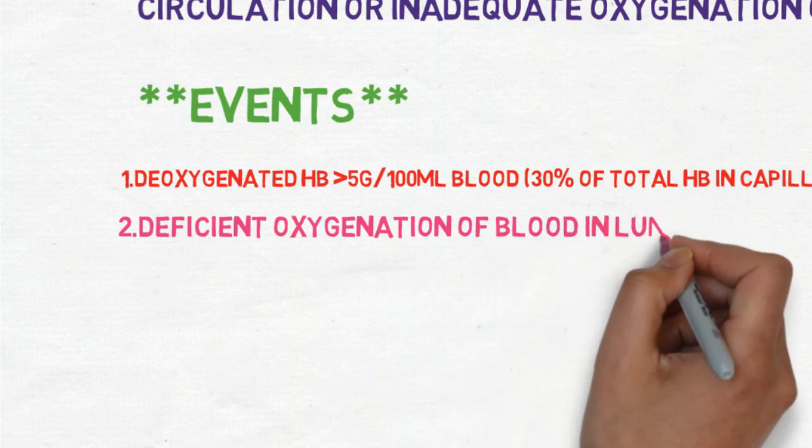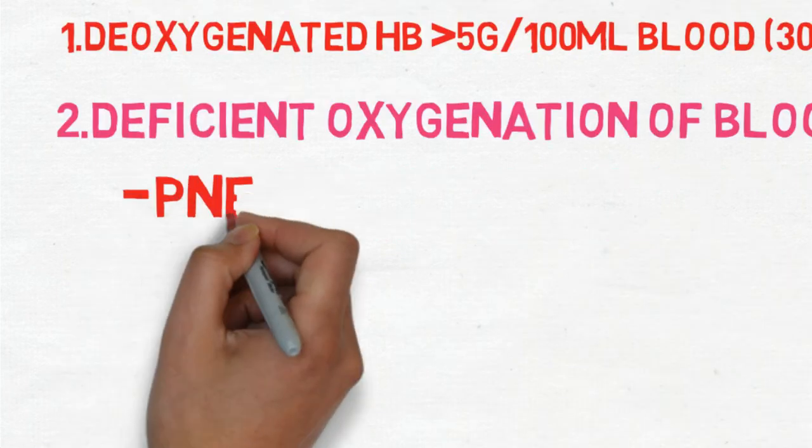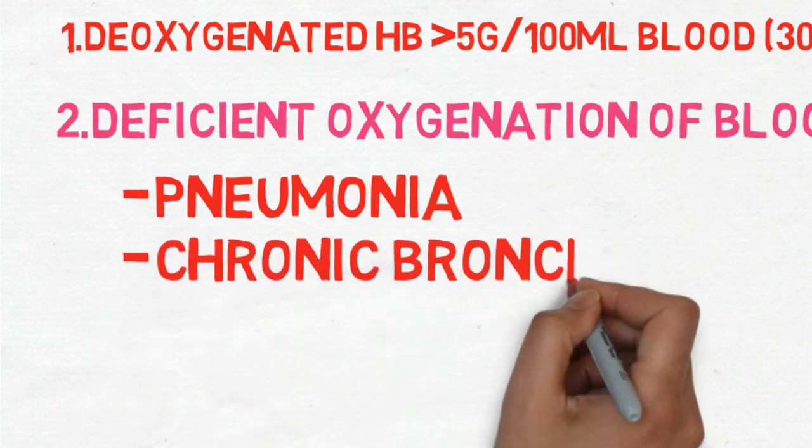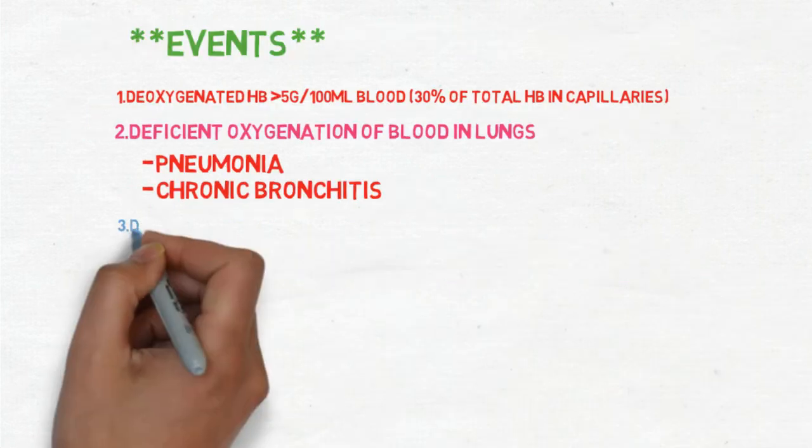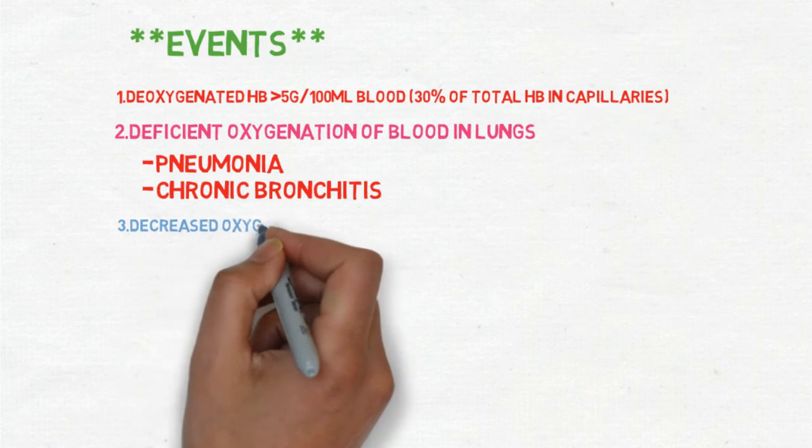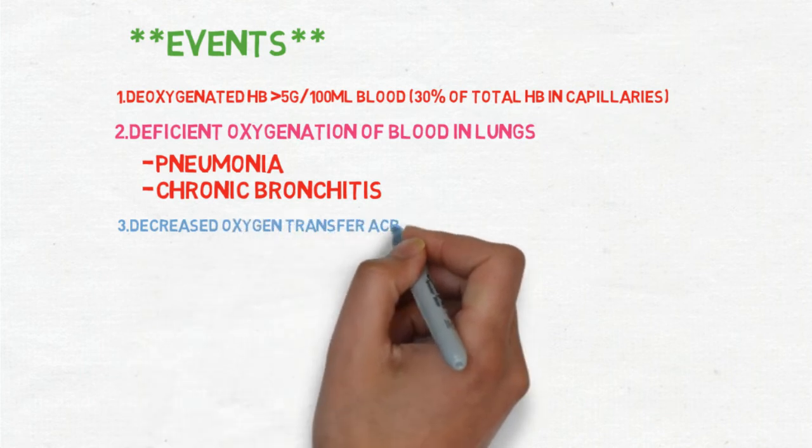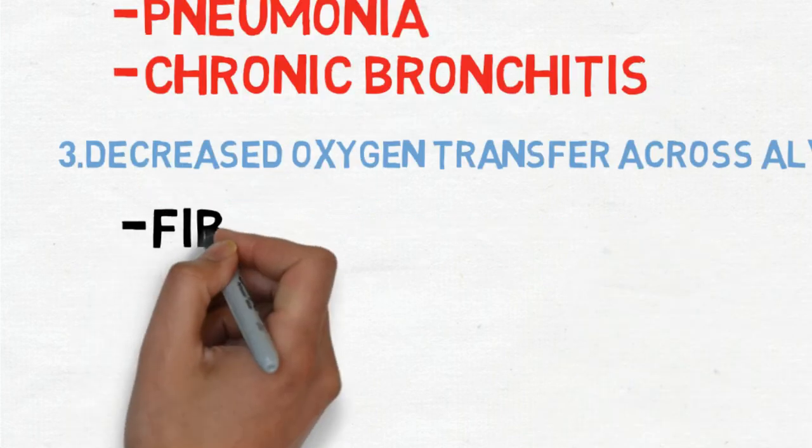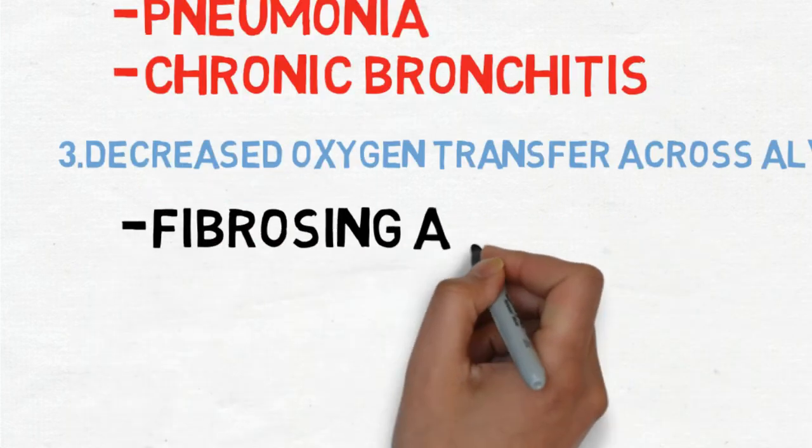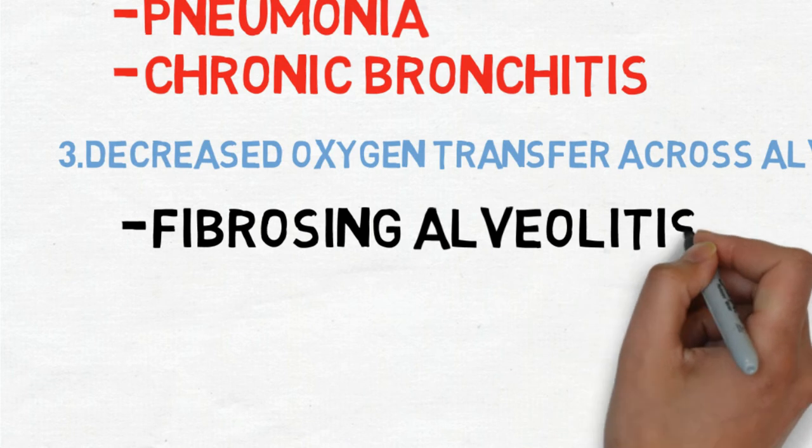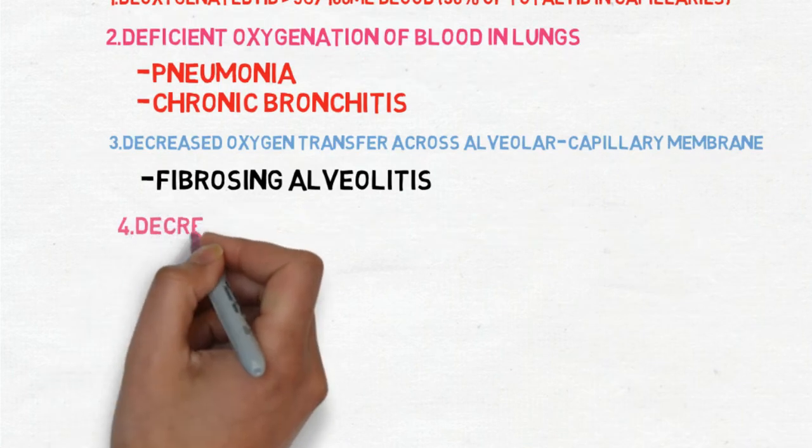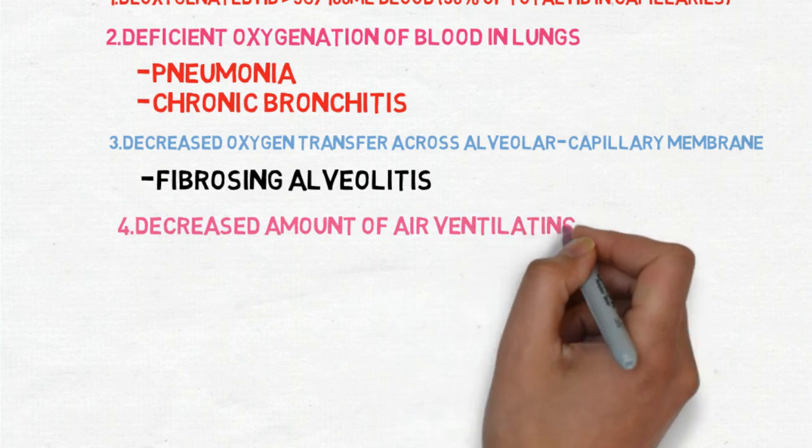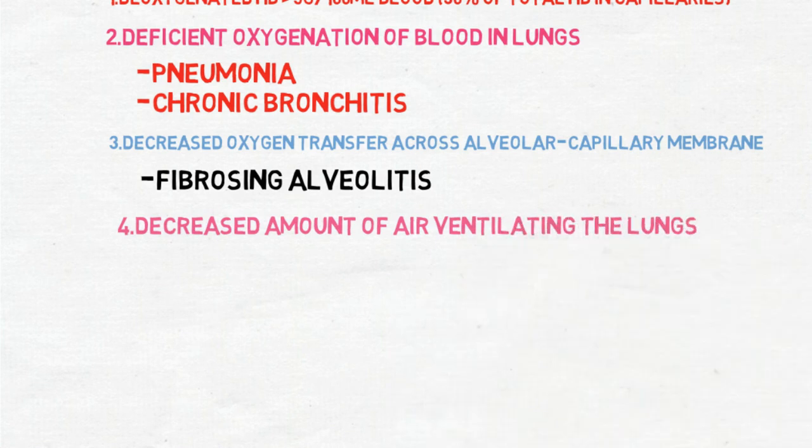Number two: deficient oxygenation of blood in lungs. It occurs in certain conditions like pneumonia and chronic bronchitis. Number three: decreased oxygen transfer across alveolar capillary membrane. It occurs in fibrosing alveolitis.